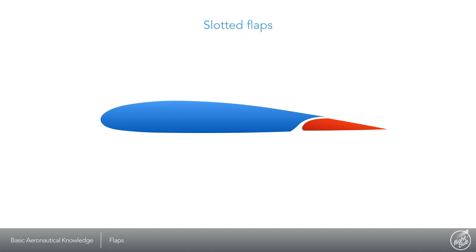Slotted flaps are similar to plain flaps except for a slot that allows the higher air pressure below the wing to flow up through to the lower air pressure above. This helps the airflow remain attached to the flap, thus increasing lift.